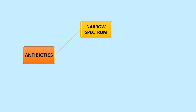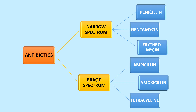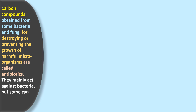Antibiotics are of two types: narrow spectrum antibiotics such as penicillin, gentamicin, and erythromycin; and broad spectrum antibiotics such as ampicillin, amoxicillin, and tetracycline. Antibiotics are carbon compounds obtained from some bacteria and fungi for destroying or preventing the growth of harmful microorganisms. They mainly act against bacteria but some can also destroy protozoa.